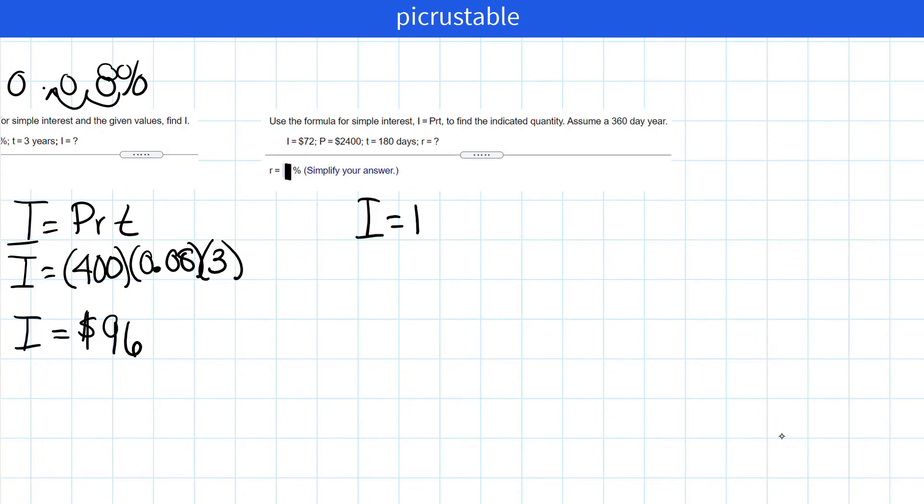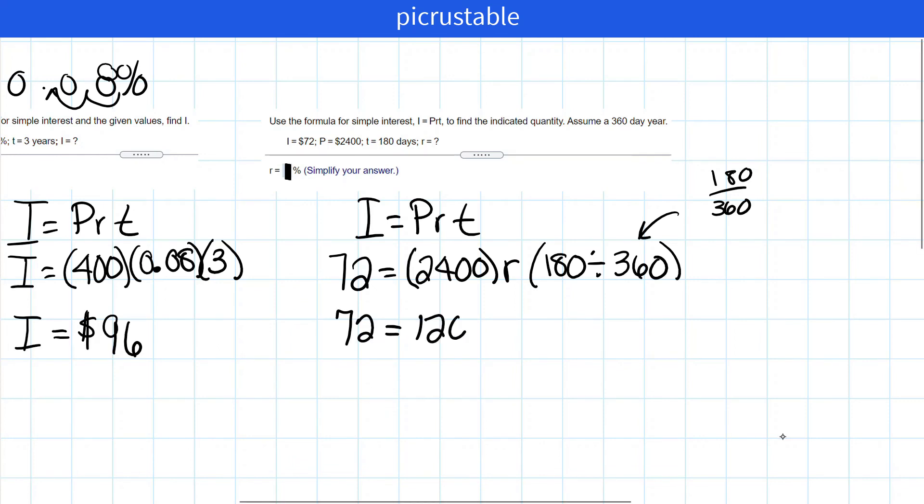I equals PRT. We know that I is 72. P is 2,400. The rate, we don't know, so we're going to leave the R there. And the time is 180 days. So we will take 180 divided by 360. Now once again, remember, you could put this in your calculator as a fraction. It's totally up to you what you would like to do. Now let's multiply. We have 72 equals 1,200 R.